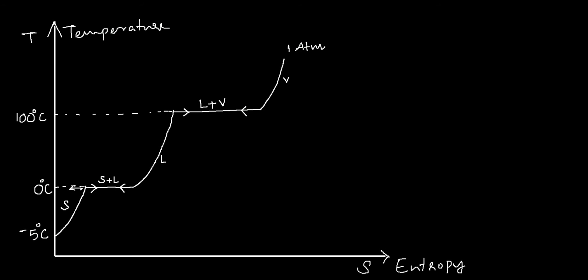We have started the discussion on temperature-entropy diagram in the previous sequence of this video, and here we are continuing with the same topic. We have drawn this phase change process of H2O in the previous video, where you have ice at minus 5°C heated to 0°C, changing the phase to liquid, that is water.